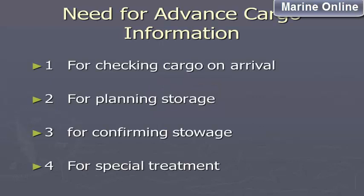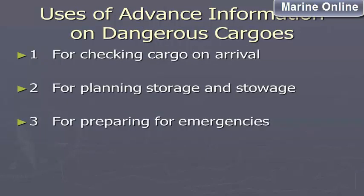Need for advanced cargo information: 1. For checking cargo on arrival. 2. For planning storage. 3. For confirming stowage. 4. For special treatment. Uses of advanced information on dangerous cargoes: 1. For checking cargo on arrival. 2. For planning storage and stowage. 3. For preparing for emergencies. Inspection re-slots and stowage categories and sources of information on stowage.